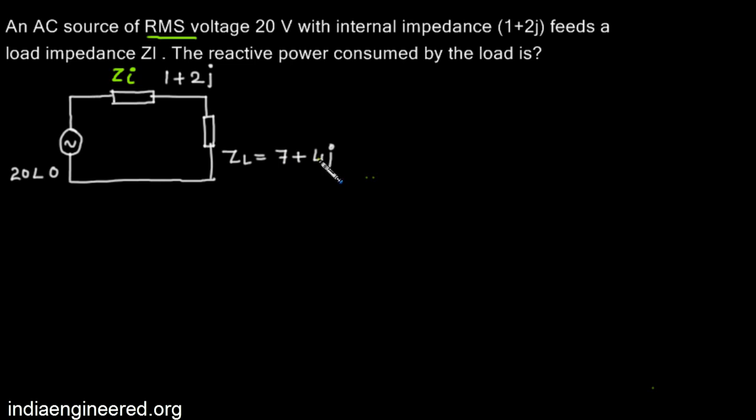Now we have to find out the reactive power. There are different ways to solve this. Since it's an AC circuit, we will have reactive power and active power. First we will find out the power, then we will separate the reactive power and active power. I will prefer to find out the voltage across this load and the current through the load.